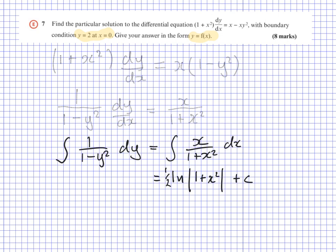Of course, c could be equally written as ln of k, which might be useful for later when we come to put numbers into this. Now we need to look at the left-hand side. I'll go to a new page again and consider the integral of 1 over 1 minus y squared.